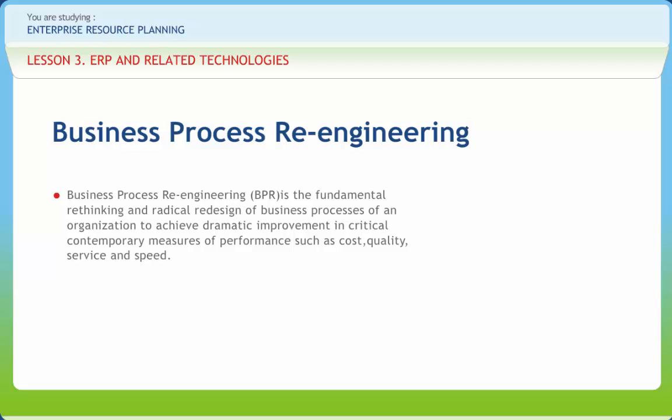By definition, re-engineering is radical change fast. Re-engineering involves fundamental rethinking and transformation of an integrated set of business processes. Re-engineering demonstrates breakthrough thinking and aims at dramatic business results. Unlike quick hits and incremental improvement, re-engineering is a form of organizational change characterized by dramatic process transformation.